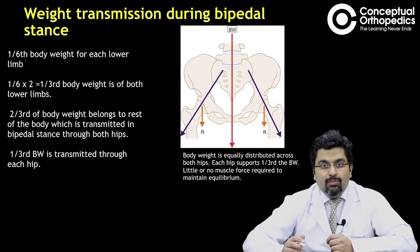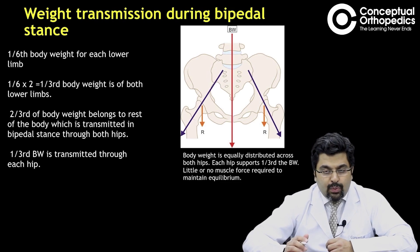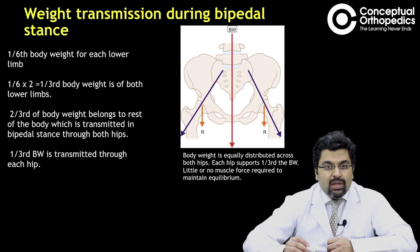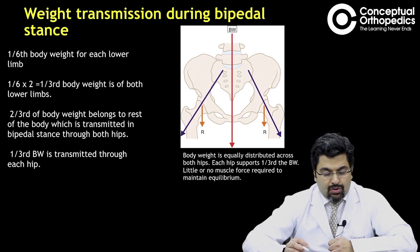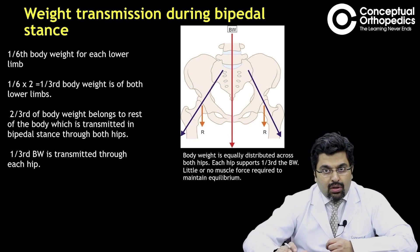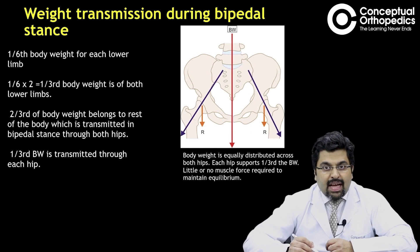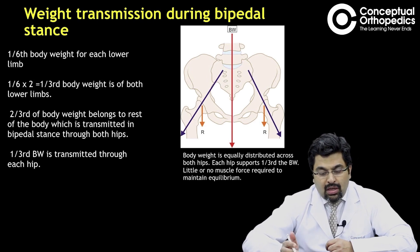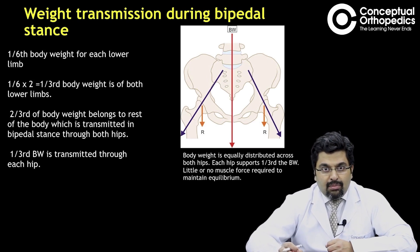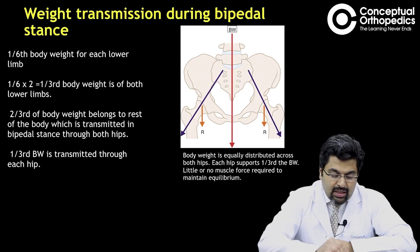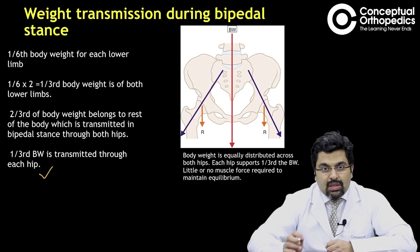To start with, let's talk about weight transmission. The whole body weight can be divided into different parts. Each lower limb is equal to one sixth of body weight, so both lower limbs together are one third of body weight. Excluding the lower limbs, the remaining body is two thirds of body weight, which has to be transmitted by both lower limbs. In a simple bipedal stance, both lower limbs transmit about two thirds of body weight, meaning each hip has to transmit one third of body weight.